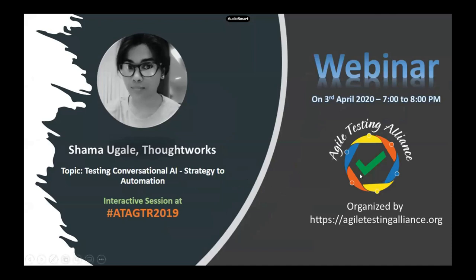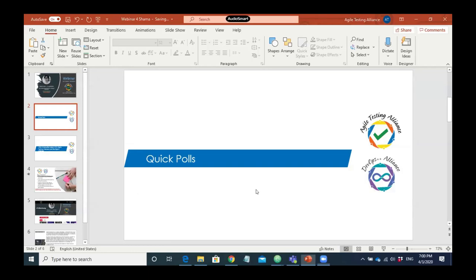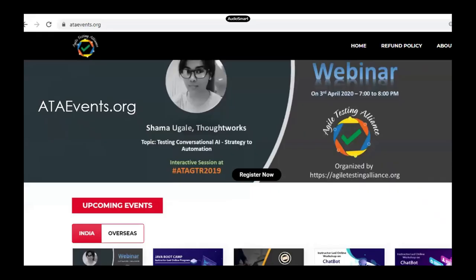We'll do a quick poll as we normally do in our webinars. Let me take two minutes to explain what AT is trying to do. AT has four agenda points - our mission and vision: creating communities that collaborate, growing awareness around technology not only in testing and agile testing but also in DevOps, machine learning, big data, and blockchain. We did a very successful conference last year, and we have practical assessment-driven programs. Check out ataevents.org for all upcoming events.